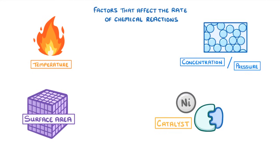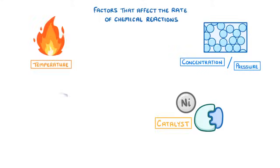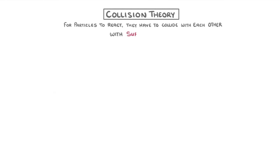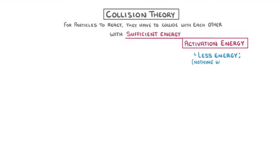Before we can understand how these factors affect the rate though, we need to cover the theory behind reactions, which is known as collision theory. This states that in order for particles to react, they have to collide with each other with sufficient energy, which we call the activation energy. And if they collide with less energy than this, then nothing will happen, they'll just bounce apart again.